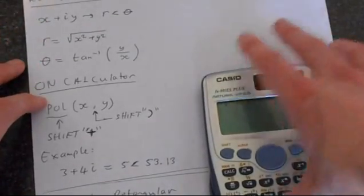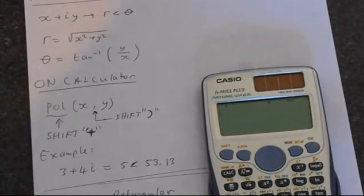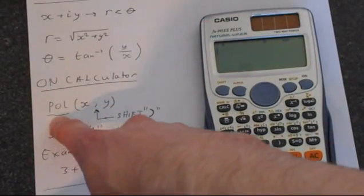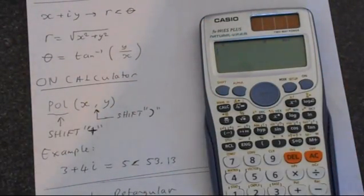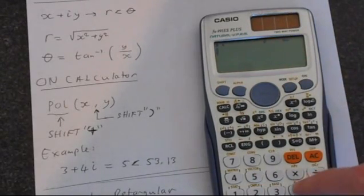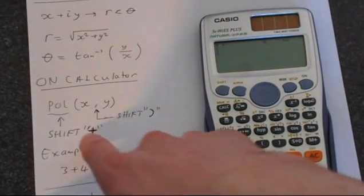So how do you do this on the calculator? Rectangular form to polar form. Well, there's a function pol for polar. It's very simple to use. You just press shift, and then pol, which is on the plus.